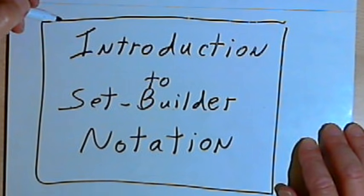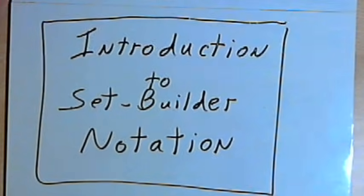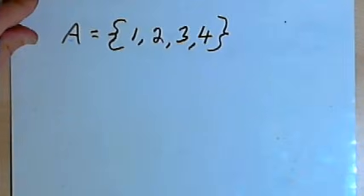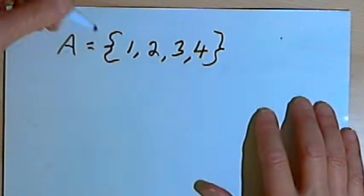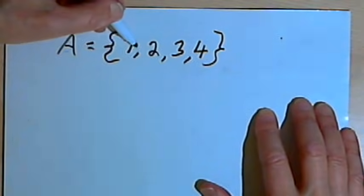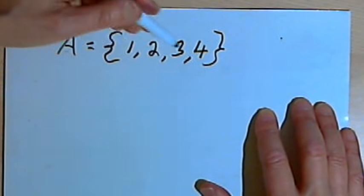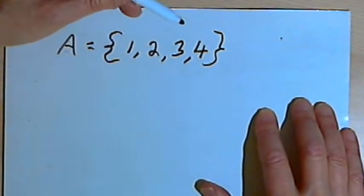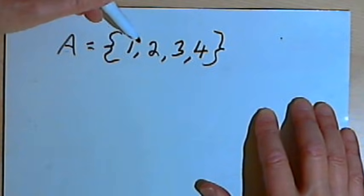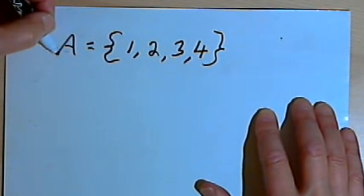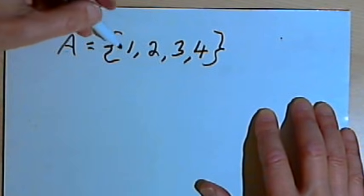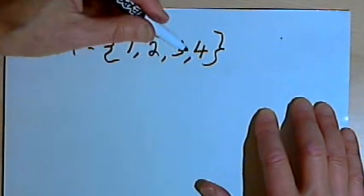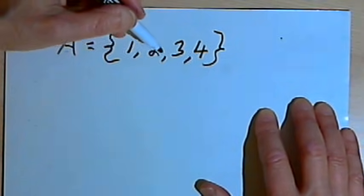This video is going to be an introduction to set builder notation. So there are basically two ways to write a set. One way is just to list all the elements of the set inside curly braces. So if I have a set with just the four elements 1, 2, 3, 4, I can write capital A, we'll call this set A, equals and then inside curly braces 1, 2, 3, and 4 separated by commas.